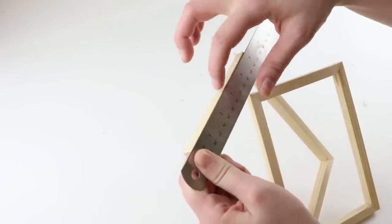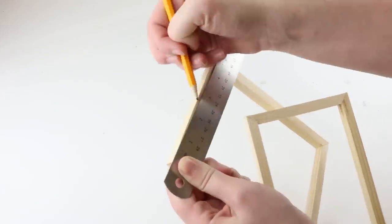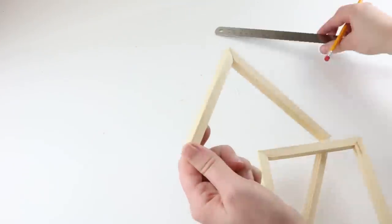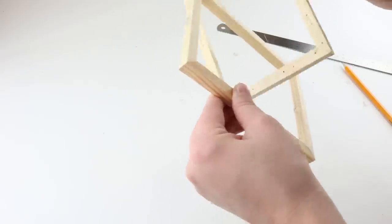Measure the middle on the bottom and the top so you know where to put your hot glue. Then, put hot glue on those two parts and put the canvas on top.